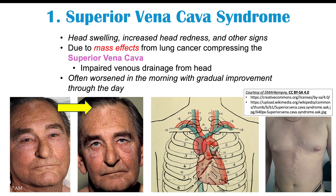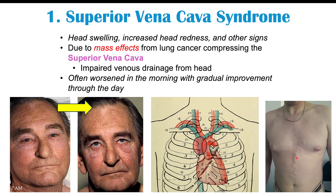Other findings of superior vena cava syndrome include dilated veins on the chest, especially the upper chest and upper abdomen, all due to the mass effect compressing the superior vena cava.